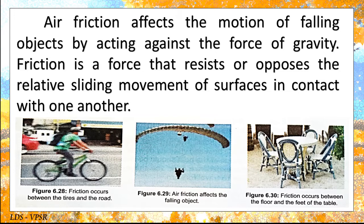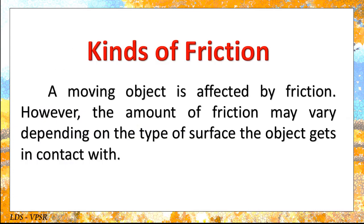Friction occurs between the floor and the feet of the table. Kinds of friction: a moving object is affected by friction. However, the amount of friction may vary depending on the type of surface the object gets in contact with.